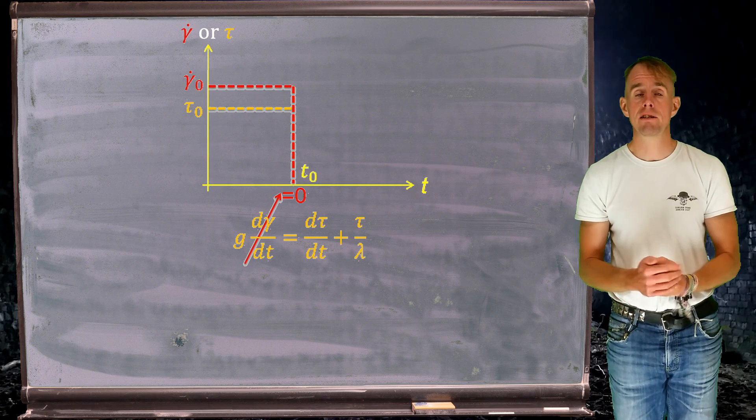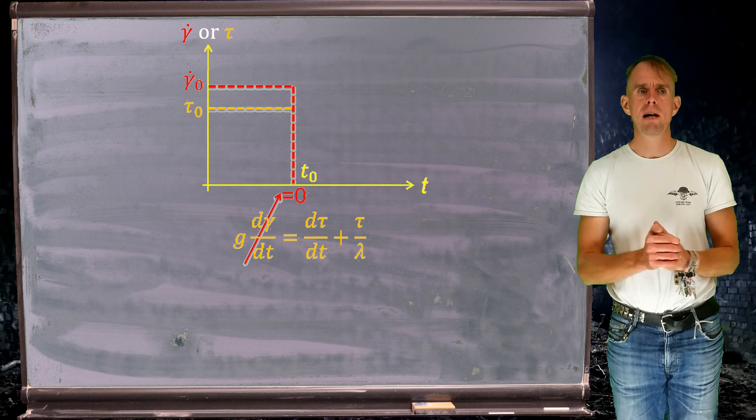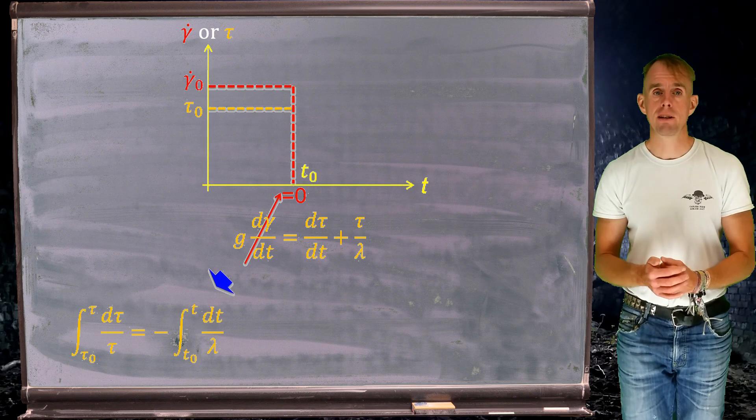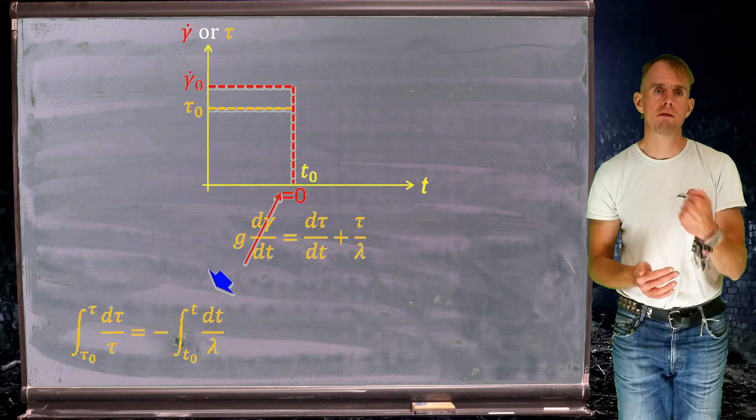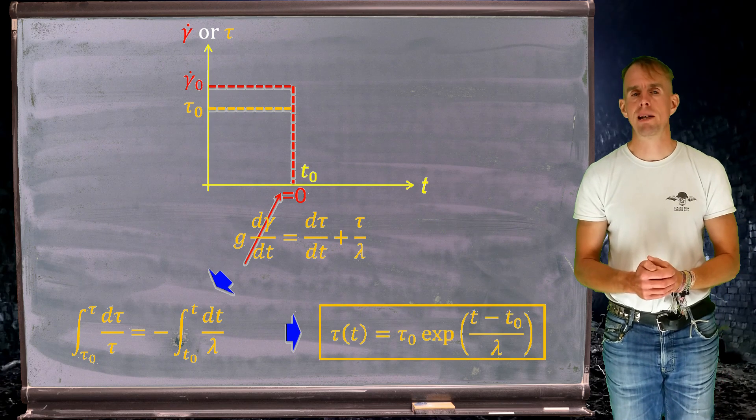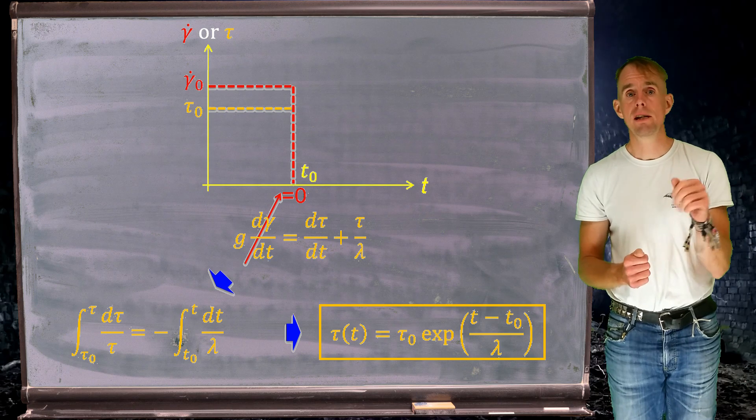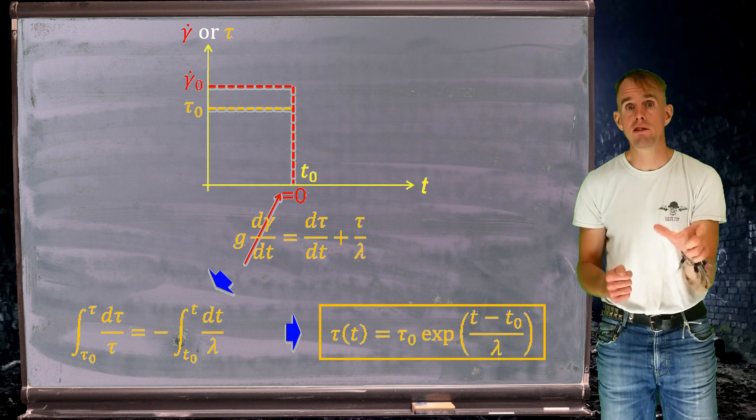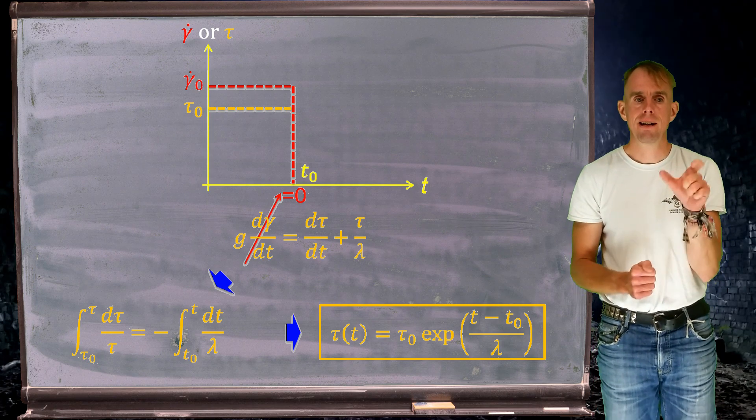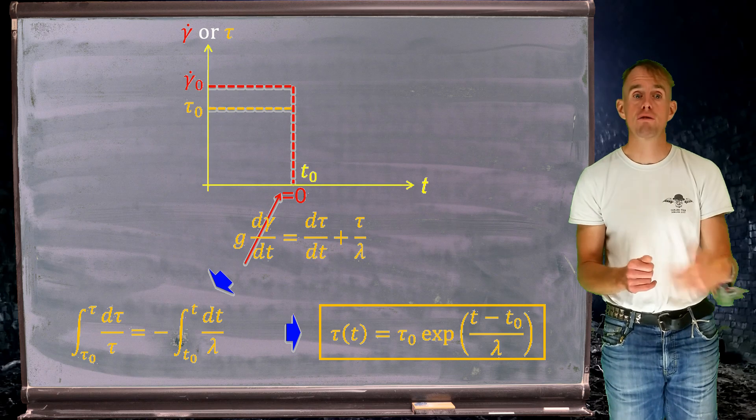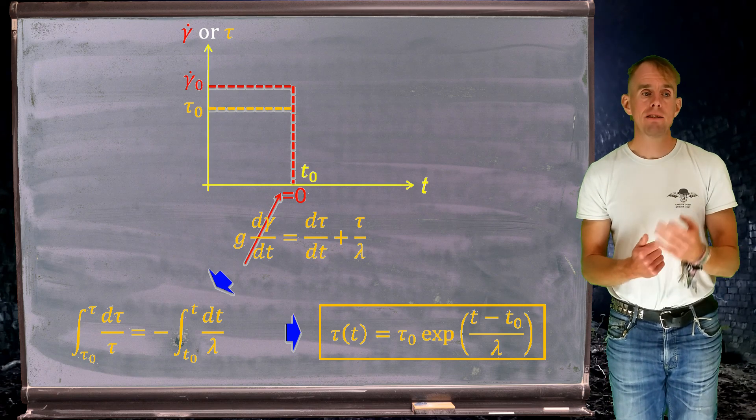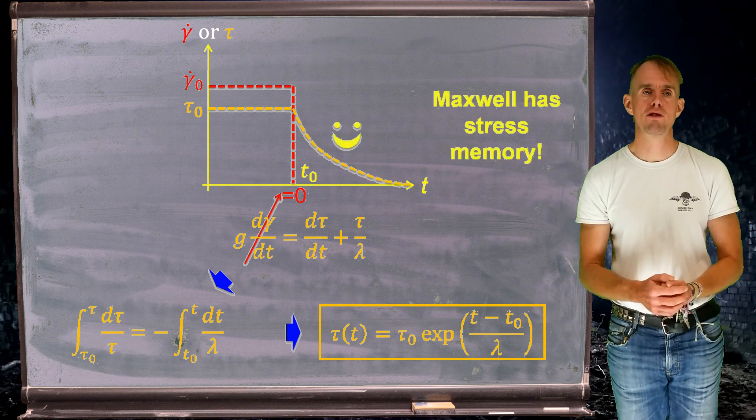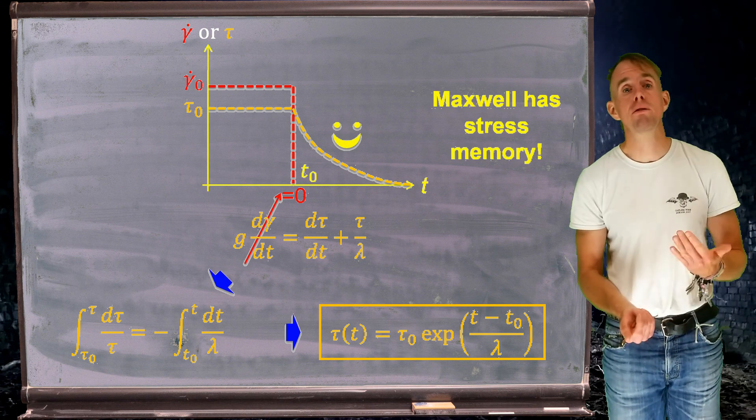Let's look at our Maxwell constitutive law. There we have g d gamma by dt. If we examine the time period after t0, we don't have a strain rate any longer—it's 0. So g d gamma by dt falls to 0. On the right-hand side, we have our stress behavior with respect to time, which is what we want to find out. If we take that expression, rearrange it, integrate it, we end up with a form of exponential decay. Tau of t equals tau0 exponential of t minus t0 over lambda. Now you can see why we wanted to write all these expressions with lambda. Lambda is our characteristic time scale for stress relaxation.